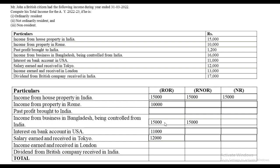Next, income earned and received in London — again it is foreign income, so only the first person will have to pay tax. Last, dividend from a British company, but it is received in India. Since it is received in India, everyone pays tax for it. And after solving all items, you just need to total it up.